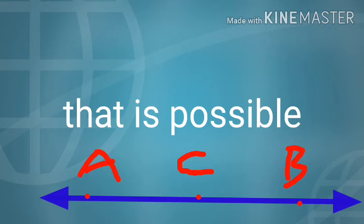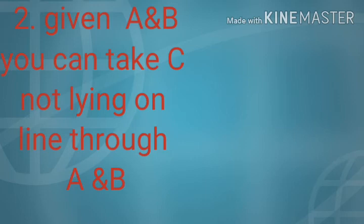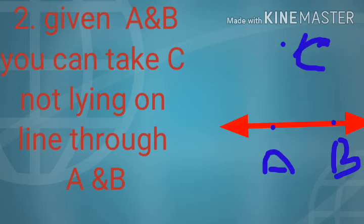A line with two points A and B — between A and B, there is a point C lying on the same line. The second one says that given A and B, you can take C not lying on the line through A and B. These two postulates are consistent because they represent two different situations.